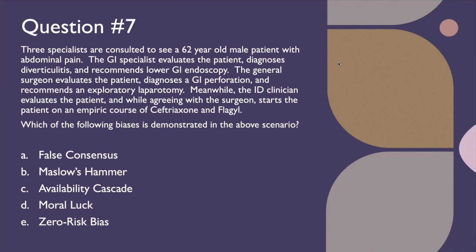Question number seven: Three specialists are consulted to see a 62-year-old male patient with abdominal pain. The GI specialist diagnoses diverticulitis and recommends a lower GI endoscopy. The general surgeon diagnoses a GI perforation and recommends an exploratory lap. Meanwhile, the ID clinician evaluates the patient and, while agreeing with the surgeon, starts the patient on an empiric course of ceftriaxone and flagyl. Which of the following biases is demonstrated — false consensus, Maslow's hammer, availability cascade, moral luck, or zero risk bias?